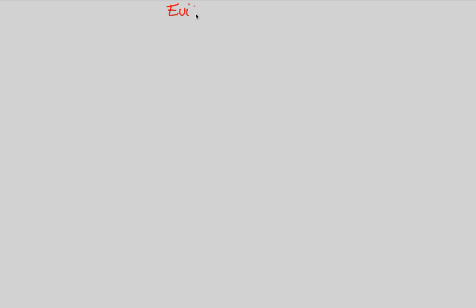In this final video on the evidence for evolution, we'll conclude our look at the pieces of evidence in this flowchart titled Evidence for Evolution 1, 2, 3. We're going to continue our general look at the evidence for evolution that you are responsible for as a general biology student by looking at something known as the fossil record.